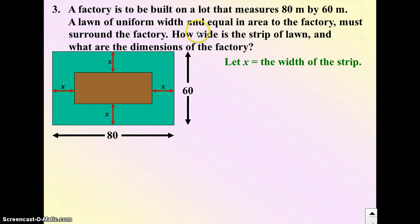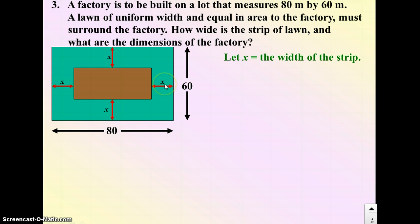We're trying to find out the length or the width of that strip of lawn, the value of x. That's what our variable is. So what things do we know? So if we're labeling the width as x of the lawn, and the dimensions of the lawn are 80 by 60, I can figure out the dimensions of the actual factory in brown. So this length is 60 subtract x, subtract x. So this length is 60 minus 2x. And the length of the factory would be 80 subtract x here, and subtract x there.